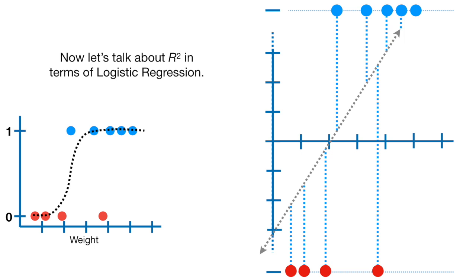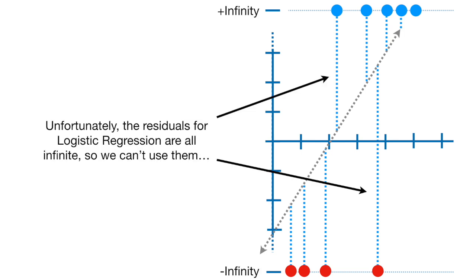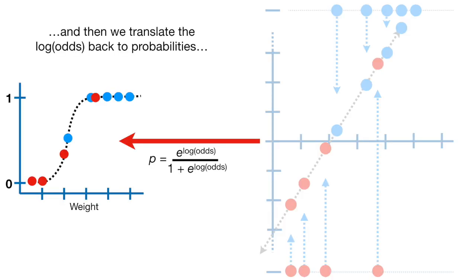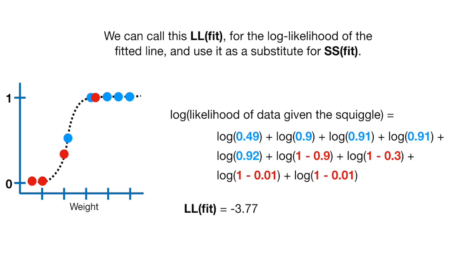Now let's talk about R squared in terms of logistic regression. Like linear regression, we need to find a measure of a good fit to compare to a measure of a bad fit. Unfortunately, the residuals for logistic regression are all infinite, so we can't use them. But we can project the data onto the best fitting line, translate the log odds back to probabilities, and calculate the log likelihood of the data given the best fitting squiggle. In this case, that gives us negative 3.77. We can call this LL fit and use it as a substitute for SS fit.